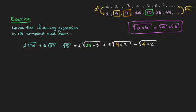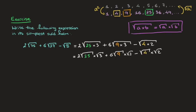With that in mind, we can write that this equals 2 times the square root of 25 times the square root of 3, plus 6 times the square root of 9 times the square root of 3, take away the square root of 4 times the square root of 2.